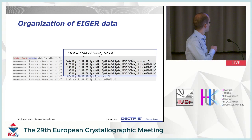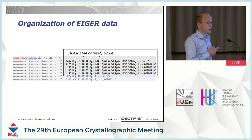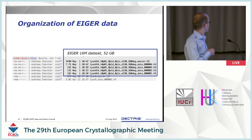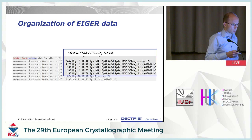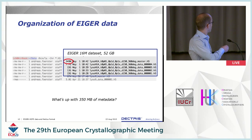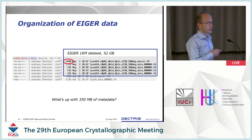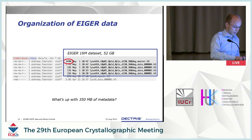This is not the smartest way of doing it, because of compatibility — you probably want to go below 4 gigabytes per file because 32-bit file systems cannot handle larger files. But this can be set during data collection. You might wonder, since we're talking about metadata, the master file contains 349 megabytes. That's a lot, and it's explained in part by there being 16 or 17 million pixels, with a flat field and a pixel mask — these things add up, so the metadata can get quite substantial.